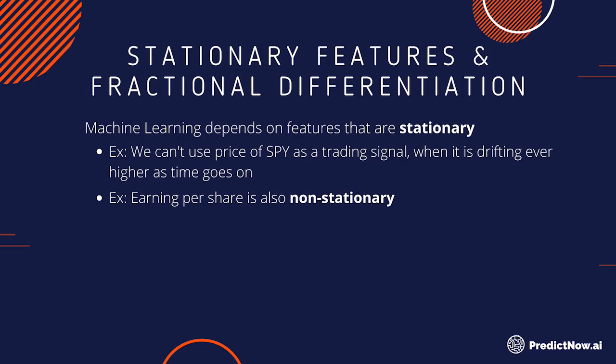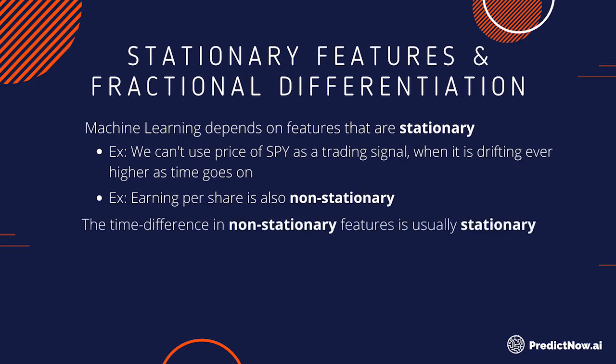So how do we deal with those non-stationary series? Well, traditionally, one way to deal with it is very simple: take the difference, take the percent difference. Another way of saying percent difference is to take the log return. Log return is a little bit better than percent difference for the reason that log return is normally distributed, but percent difference is not normally distributed. Percent difference has a lower bound of minus one.